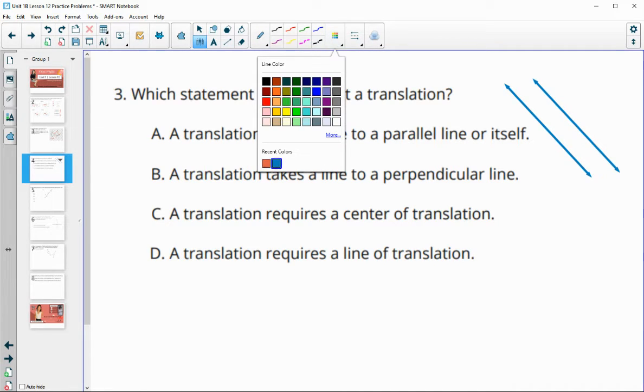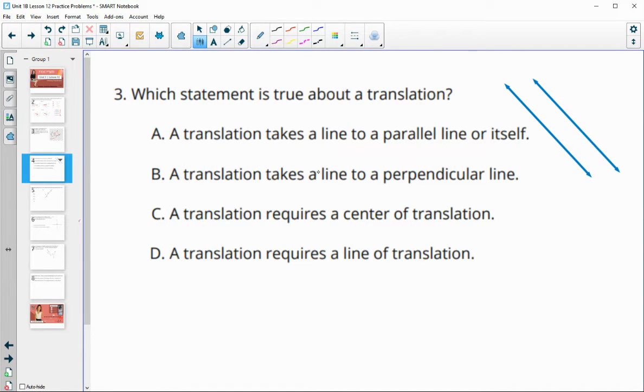But let's look at the rest of them just to make sure. A translation takes a line to a perpendicular line. So definitely doesn't do that. A translation requires a center of translation. That's not true. Just movement. A translation requires a line of translation. That is not true. So A is the correct answer.